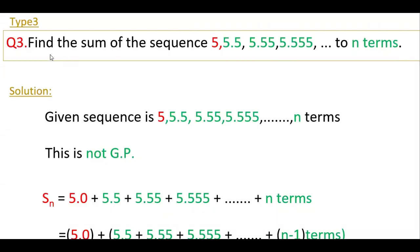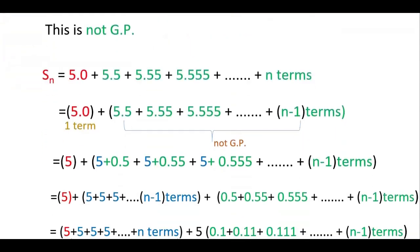This is the third problem: find the sum of the sequence 5, 5.5, 5.55, etc., to n terms. This is different from the previous two problems. First check whether it is GP or not. The common ratio is not the same, so it is not GP. You have to convert this into GP.